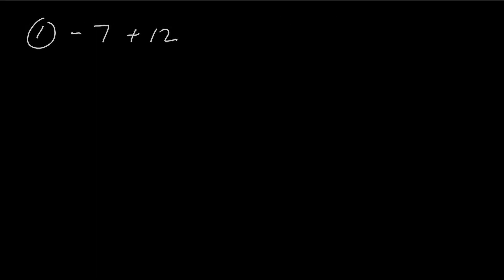So the first problem, negative 7 plus 12 — did you get positive 5? Just wanted to go over this. Remember, when you have 7 negative numbers, you can think of that as walking backwards 7 steps. And then plus 12 — that's like you're adding 12, or you're moving forward 12 steps. Think about relative to where you started, are you further forward or are you further backwards from the starting point?